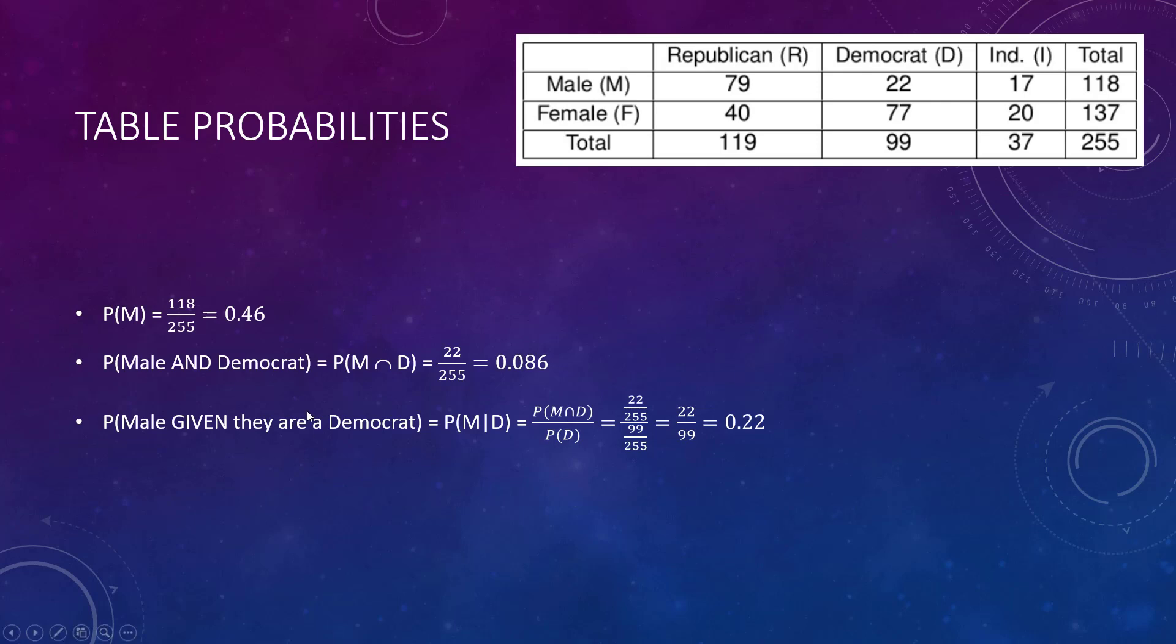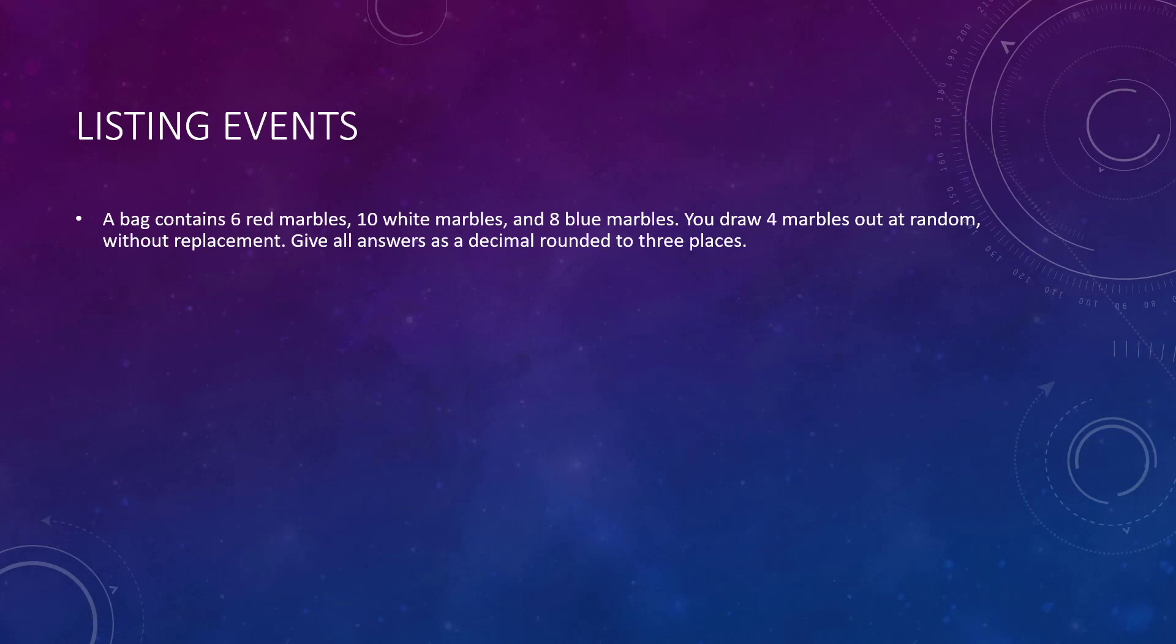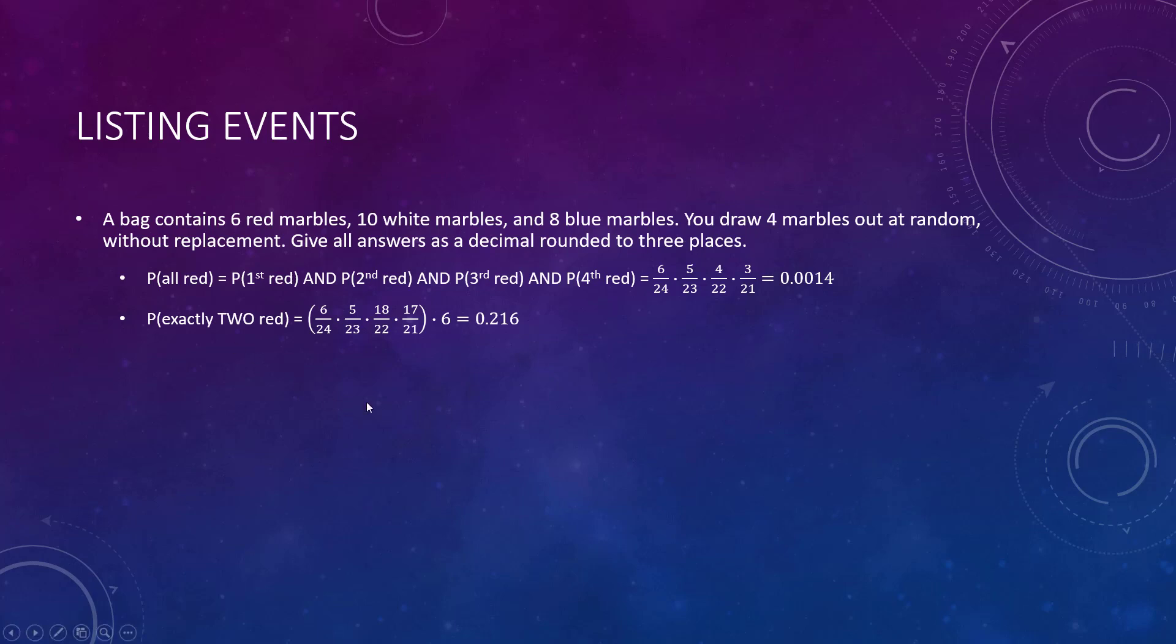A bag contains six red marbles, ten white marbles, eight blue marbles. You draw four out at random without replacement, meaning when you draw one you don't put it back. The probability they would all be red: the probability the first one's red and the second one's red. Remember, AND is multiplying. Notice that the bottom here is getting smaller because we're not replacing. Where do we get the six? Six red, five red, four red and so on.